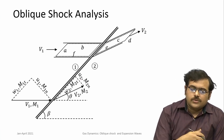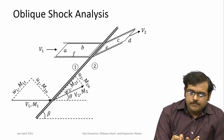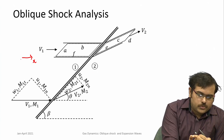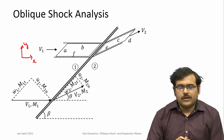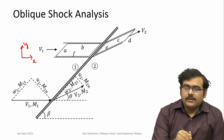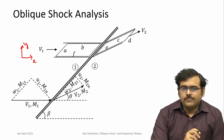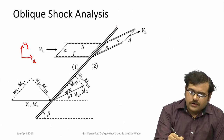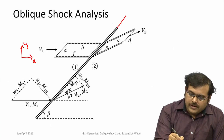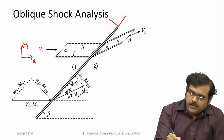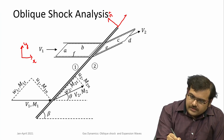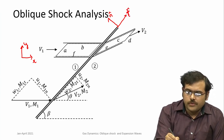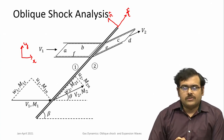There are both x and y direction components, and the way to analyze this is to sit at the shock and analyze flow features before and after the shock in the frame of the shock. The analysis is done by taking components parallel and normal to the shock — U is the normal component and W is the tangential component.